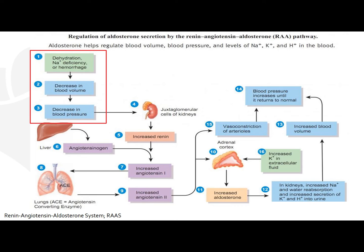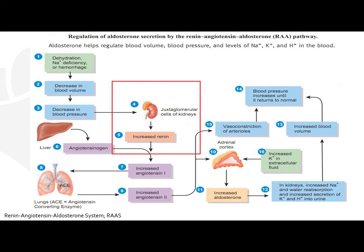What happens is this triggers the kidneys to release a hormone called renin. Renin is an enzyme that is stored in the juxtaglomerular cells, which are located in the afferent arterioles of the kidney. The release of renin is modulated by several factors — there are intrarenal factors and external factors. Some examples of intrarenal factors include renal perfusion pressure, catecholamines, and angiotensin 2.